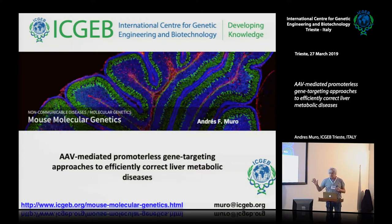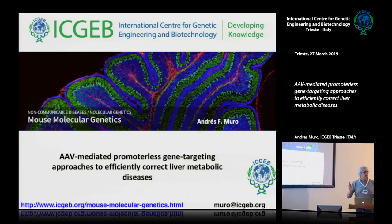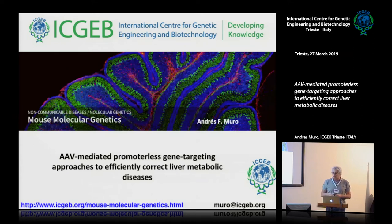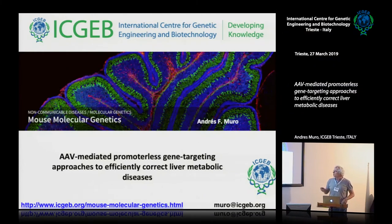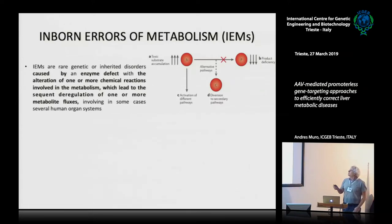One is gene targeting, which I will explain more later. The other one, which will be presented tomorrow, is classical gene therapy in the sense that we are not modifying the genome. It is an AAV-mediated gene targeting approach to correct Crigler-Najjar disease.